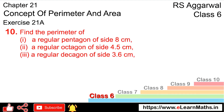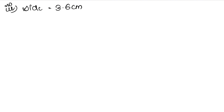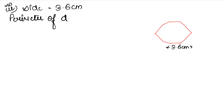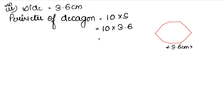The third part is a regular decagon of side 3.6 cm. A decagon has 10 sides. Perimeter of decagon equals 10 into side, so 10 into 3.6 cm. Multiplying by 10 shifts the decimal point, giving us 36 cm. So 36 cm is the perimeter.